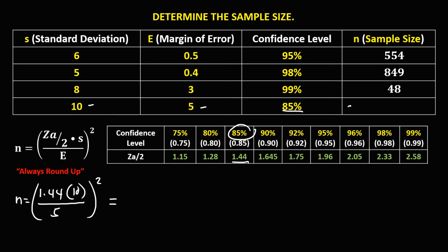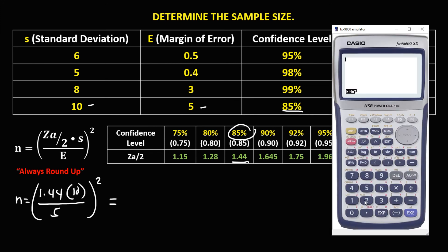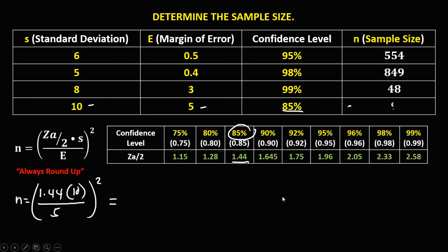To solve for this sample size: 1.44 times 10, divided by 5, then to the power 2. The sample size is 8.29. Rounding up, that's equal to 9. So these are now the sample sizes for every given data.